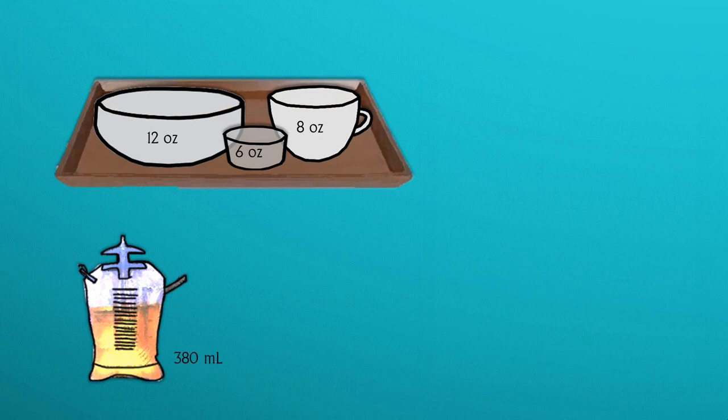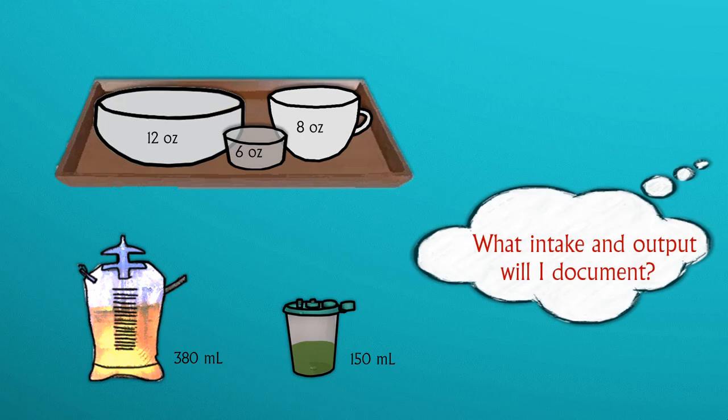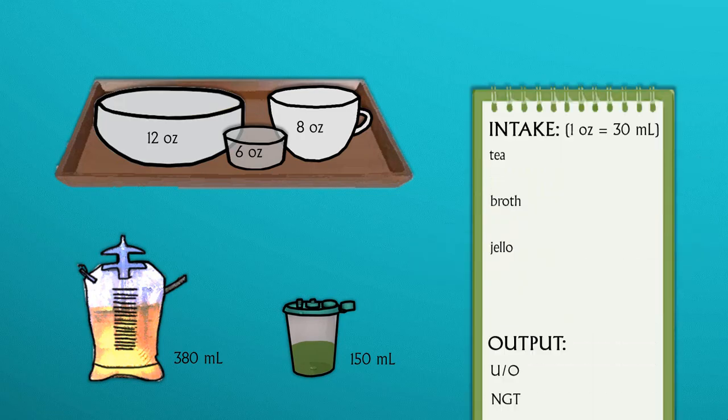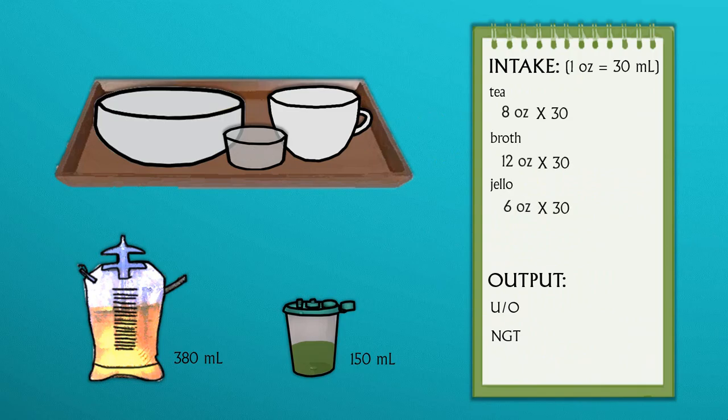What intake and output will you document for your shift? Once again, organize your intake to make sure you accounted for everything. Since volumes are given in ounces, you must convert the ounces to milliliters. Recall that one ounce is equivalent to 30 milliliters.